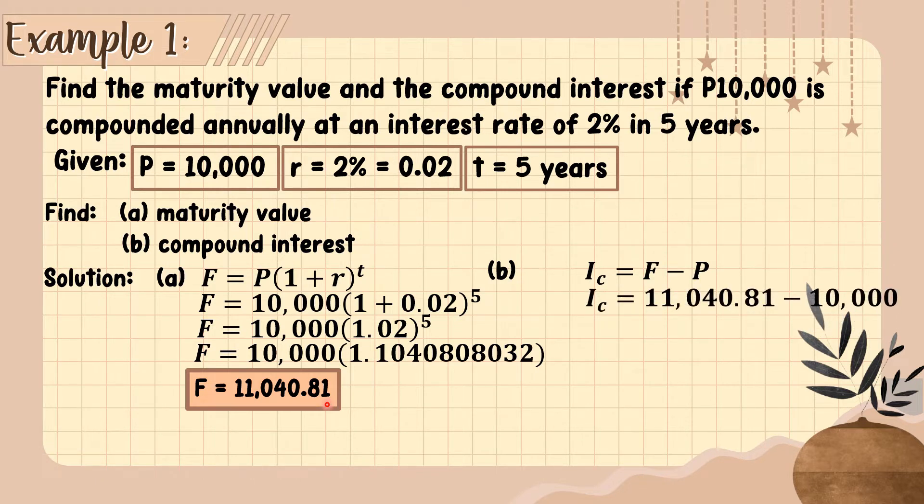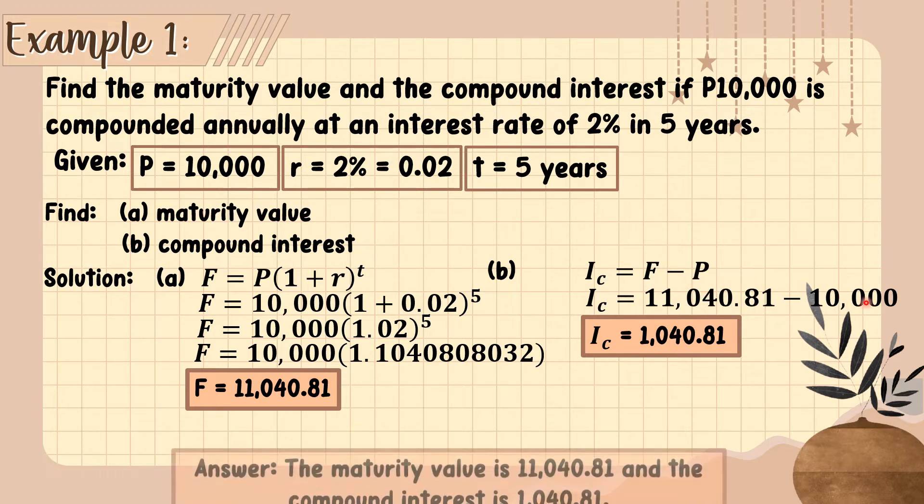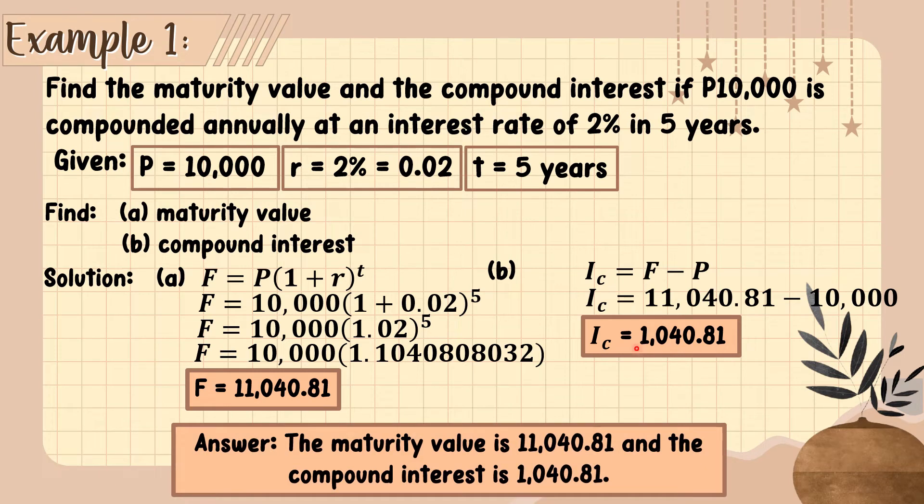Now let's proceed to the compound interest. Since we got the future or maturity value which is 11,040.81, let's substitute. The F is 11,040.81 minus the principal which is 10,000. Therefore, we have a compound interest of 1,040.81.